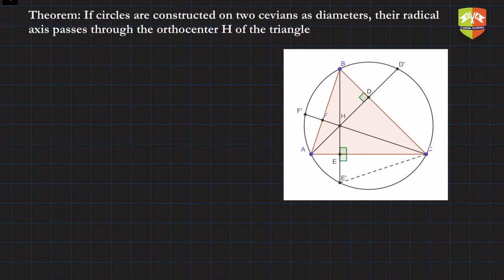The prerequisite for this session is the concept of a cevian. A cevian is a line joining any vertex to any point on the opposite side in a triangle. In the adjoining figure, BE, AD, and CF are cevians — and in fact they are a special type called altitudes, because they are perpendicular to the sides.